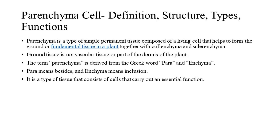Parenchyma is a type of simple permanent tissue composed of living cells that helps to form the ground or fundamental tissue in a plant, together with collenchyma and sclerenchyma. Ground tissue is not vascular tissue or part of the dermis of the plant. The term parenchyma is derived from the Greek words para, meaning 'besides,' and enchyma, meaning 'inclusion.' It is a type of tissue that consists of cells that carry out an essential function.